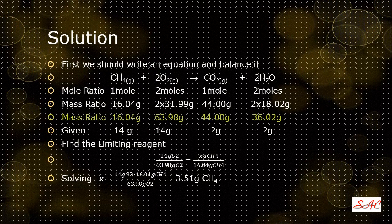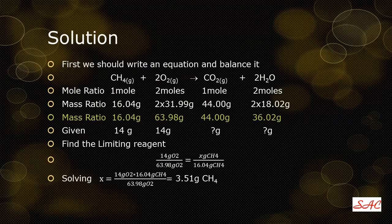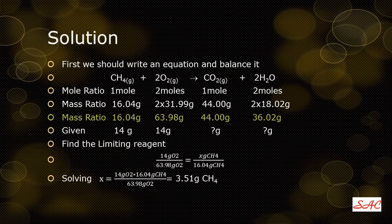Solving for x by rearranging the ratio and proportion, the value of x is 3.51 grams of methane. So if 14 grams of oxygen is taken, it can only react with 3.51 grams of methane. There is no more oxygen left — therefore oxygen is the limiting reagent and methane is the excess reagent. If you subtract 3.51 grams from 14 grams you can calculate the mass of methane that is unreacted.